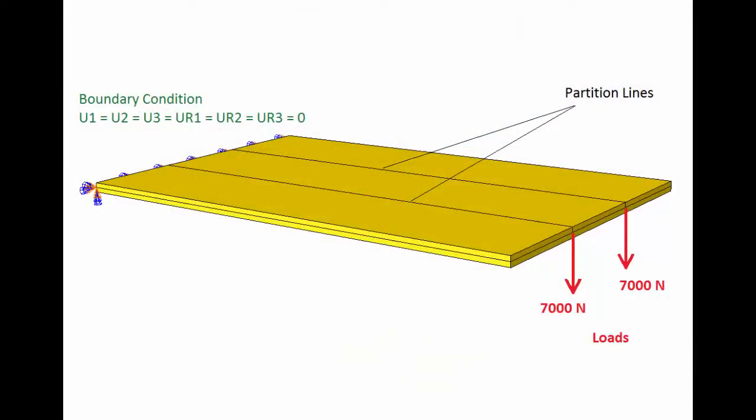One edge of the plate is fixed so that it cannot translate or rotate about any axis. Two concentrated forces of 7,000 newtons each are applied at two points on the opposite edge.